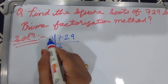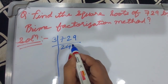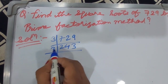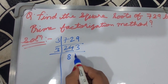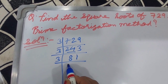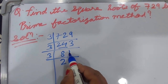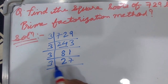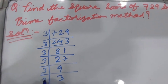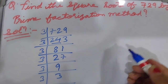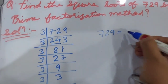Three twos are six, one remaining, it becomes twelve. Three fours are twelve, three threes are nine, three eights are twenty-four, three ones are three. Three twos are six, two remaining, it becomes twenty-one. Three sevens are twenty-one, three nines are twenty-seven, three threes are nine, three ones are three.